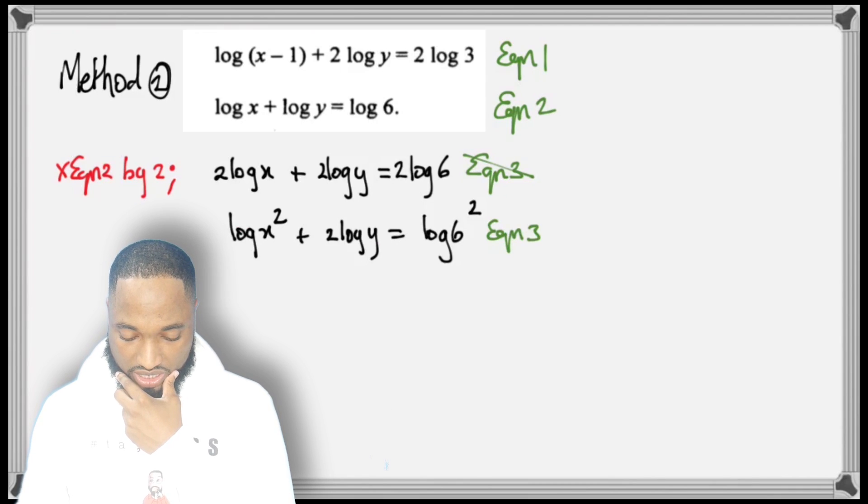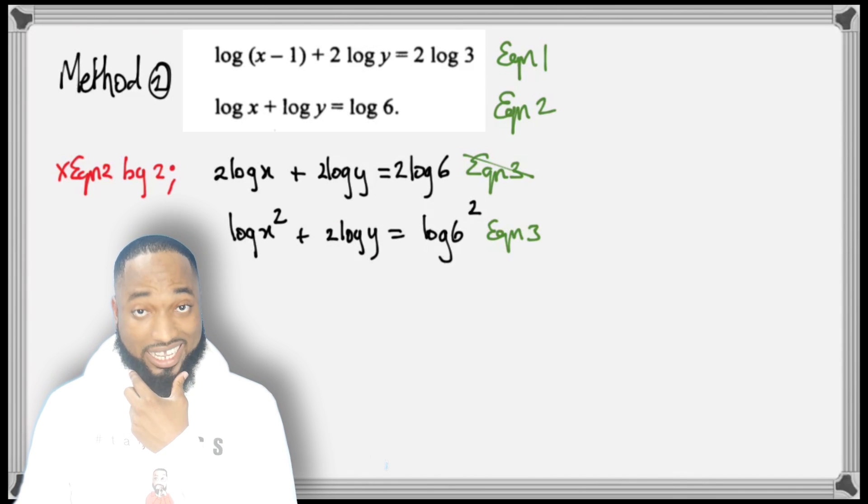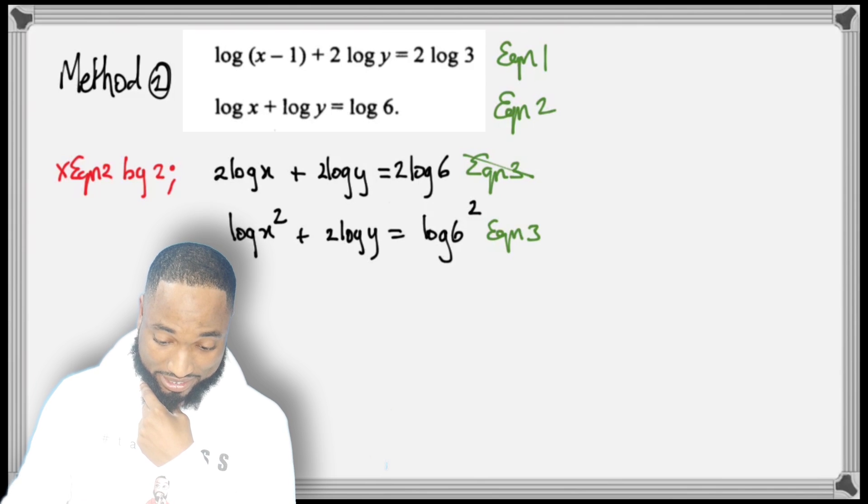Seeing that, what do you think I'm going to do? I want to rearrange this and bring up the square—make the 2 a square. So I have 2 log y here and 2 log y here. This is a brand new equation, Equation 3, and this is Equation 2. Yes, I am going to eliminate the y's out of the situation.